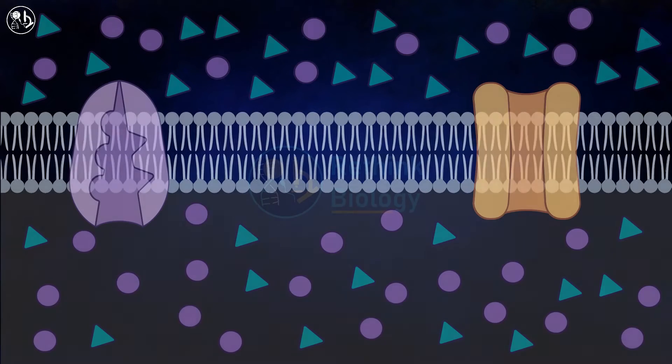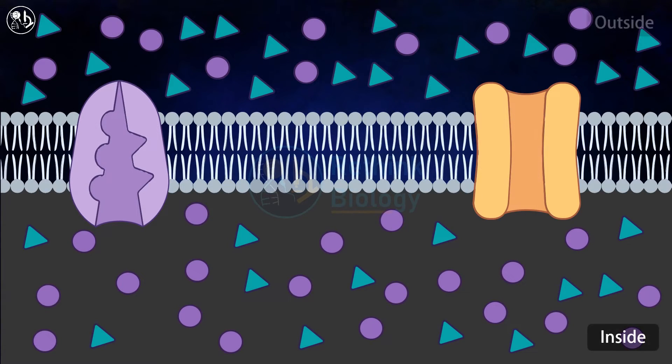This minus sign indicates that the inside of the cell is negative with respect to the outside. The resting membrane potential is maintained by two major membrane-bound channels.